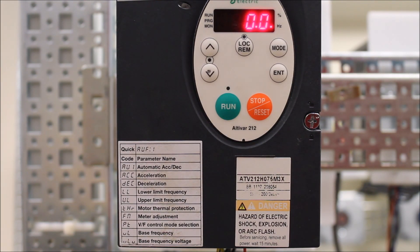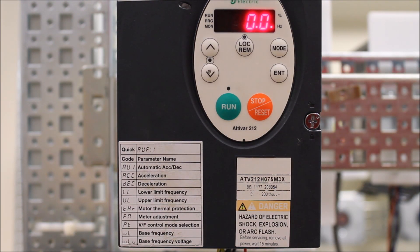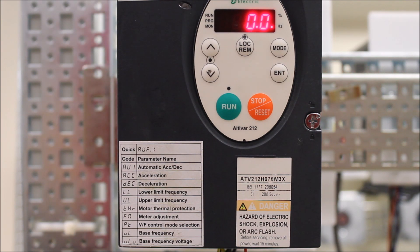In this video we're going to talk about how to set a run permissive functionality on the ATV212 drive. What I mean by run permissive is basically where you may have an e-stop button or some kind of switch where if it opens up, that's going to cause the drive to go in and stop automatically, regardless of whether your run command is still there or not.